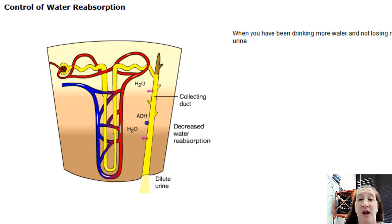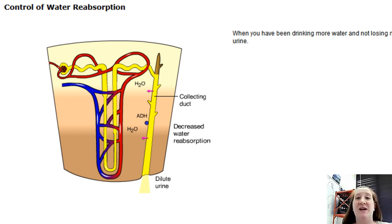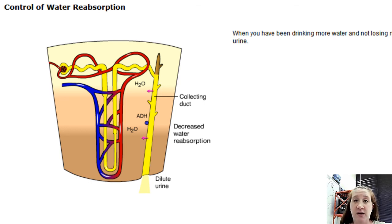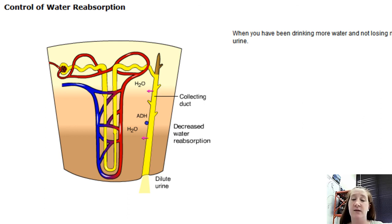When you have enough water in your blood, only a small amount of ADH is released. Only a few aquaporins on the collecting duct open up — you absorb just a little water but lose a lot through urine because you have the water to spare. When you're well hydrated, urine is almost colorless. Very yellow urine means you need to drink water; clear or colorless urine means you're doing well. Checking urine color is a good way to monitor your hydration and health.